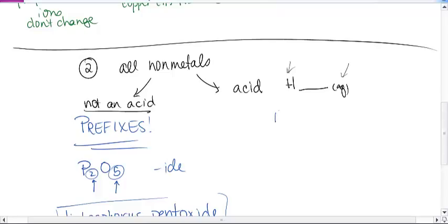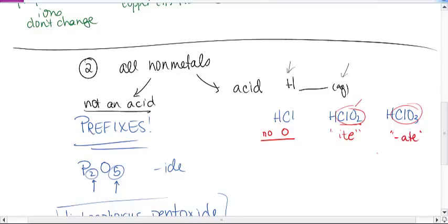Alright, acids. So you saw some examples, something like HCl, or HClO2. Three possibilities when you have an acid and you're trying to write the name. There are some that contain no oxygen in them, like HCl. There are some that contain a polyatomic ion that ends in -ite. This, by the way, is chlorite. There are some that contain a polyatomic ion that ends in -ate. If it has no oxygen, it starts with hydro, then something -ic, acid.